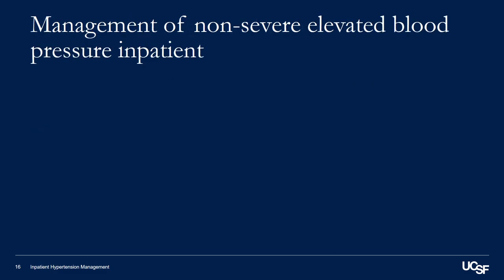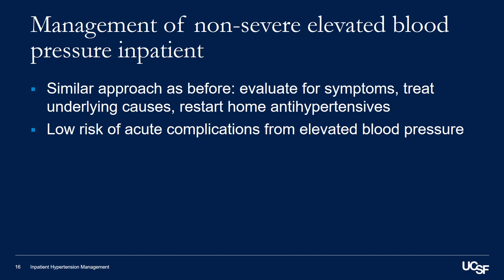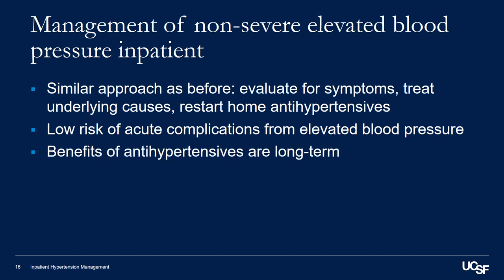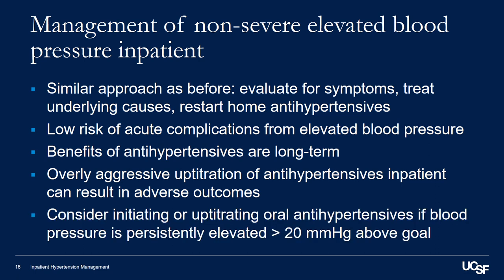Now let's talk about the management of elevated blood pressure in the inpatient setting that is not severe, or not quite as high as 180 over 120. In general, you can use a similar approach: evaluate the patient for any symptoms, treat any underlying causes, and restart their home antihypertensives unless there are contraindications. These patients are at relatively low risk for acute complications, and we know that overly aggressive uptitration in the inpatient setting can result in adverse outcomes. A practical approach is if a patient's blood pressure is persistently elevated greater than 20 millimeters of mercury above their goal over several hours or days, then you can consider initiating or uptitrating oral antihypertensives.